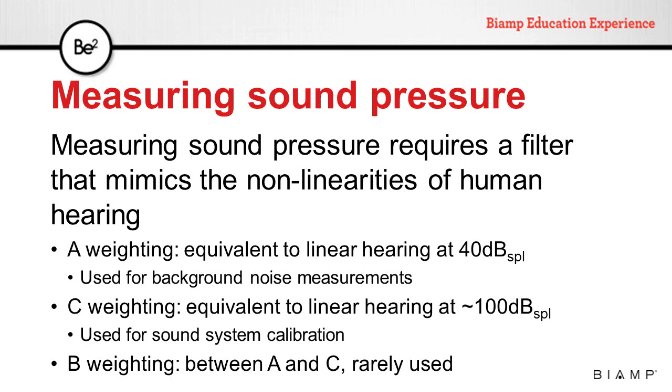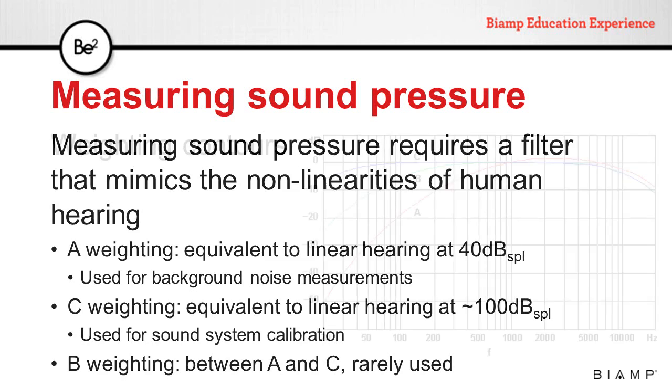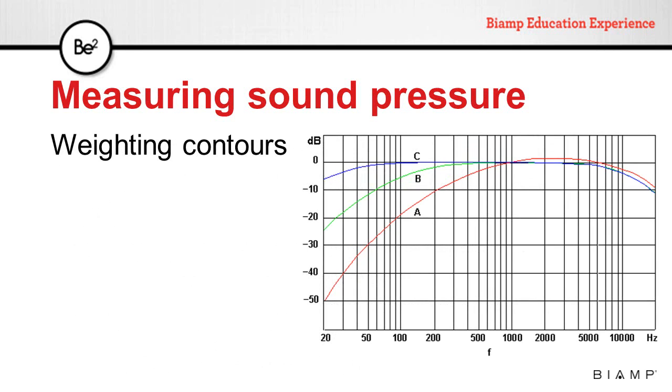B weighting is not as common these days, but is a curve between A and C. In this diagram, we can see the differences between the three weighting contours.